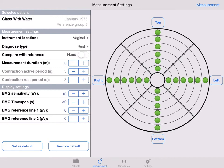I'll show you an MVC measurement compared to the healthy reference group. In the measurement settings screen, select diagnose type MVC, select compare to reference group, and press measurement on the top right.